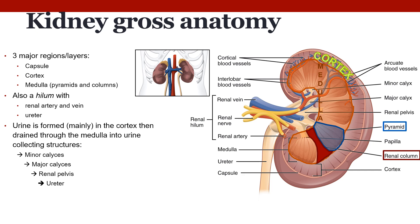Urine arrives in the collecting ducts after it's created, then flows into the minor calyx, then moves into the major calyx. Eventually it will move to the renal pelvis and then exit the kidney through the ureter. The renal hilum is the entry and exit site for structures like vessels, nerves, lymphatics, and ureters. The renal columns separate the renal pyramids and contain blood vessels as well as connective tissue.